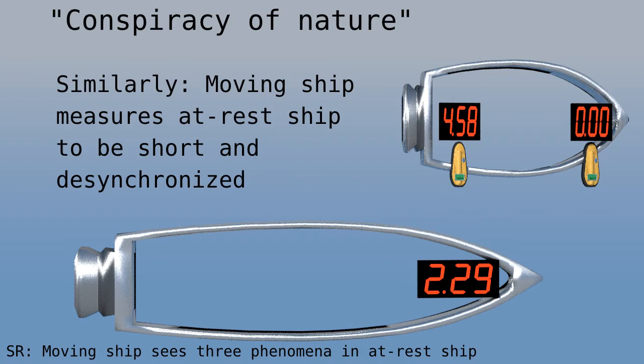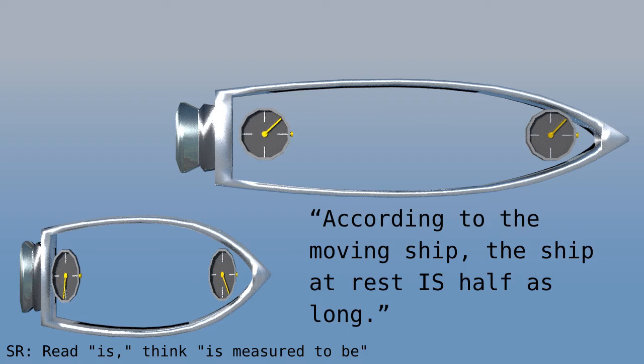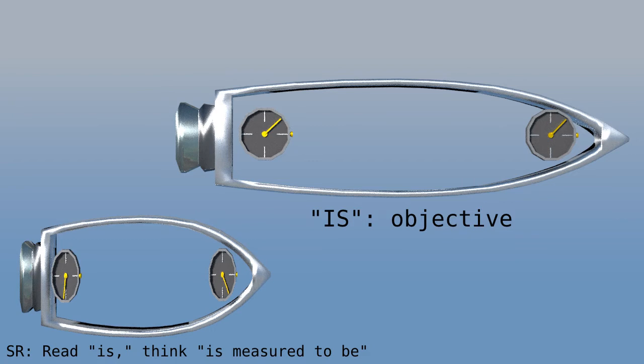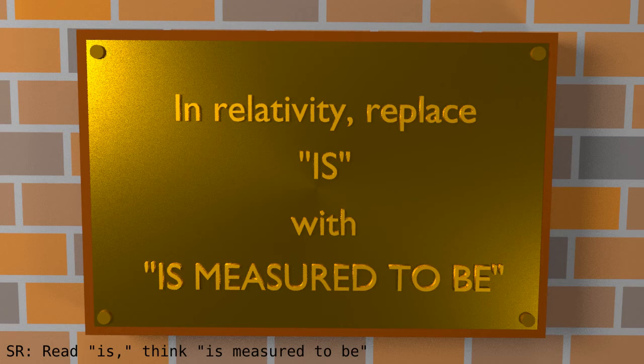I want to point out how language can be confusing. The book on relativity might say something like, according to the moving ship, the ship at rest is half as long. In this video we don't say is, we say, is measured to be. We usually think of the word is to mean something that is objectively true, not something that depends on the velocity of our spaceship. Let's put that on a plaque and emboss it. In relativity, replace is with is measured to be, and a lot of confusion goes away.